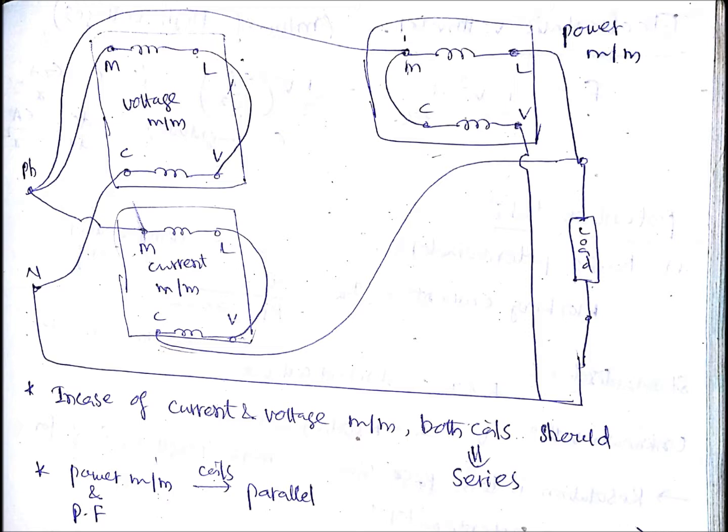Coming to the third figure, if we require to measure power, how to connect EMMC? Here the coils should be connected in parallel, different from voltage and current measurement. We observe M and C are connected together, V is connected to the negative terminal of the load, and L is connected to the positive terminal of the load. That means coils are connected in parallel.